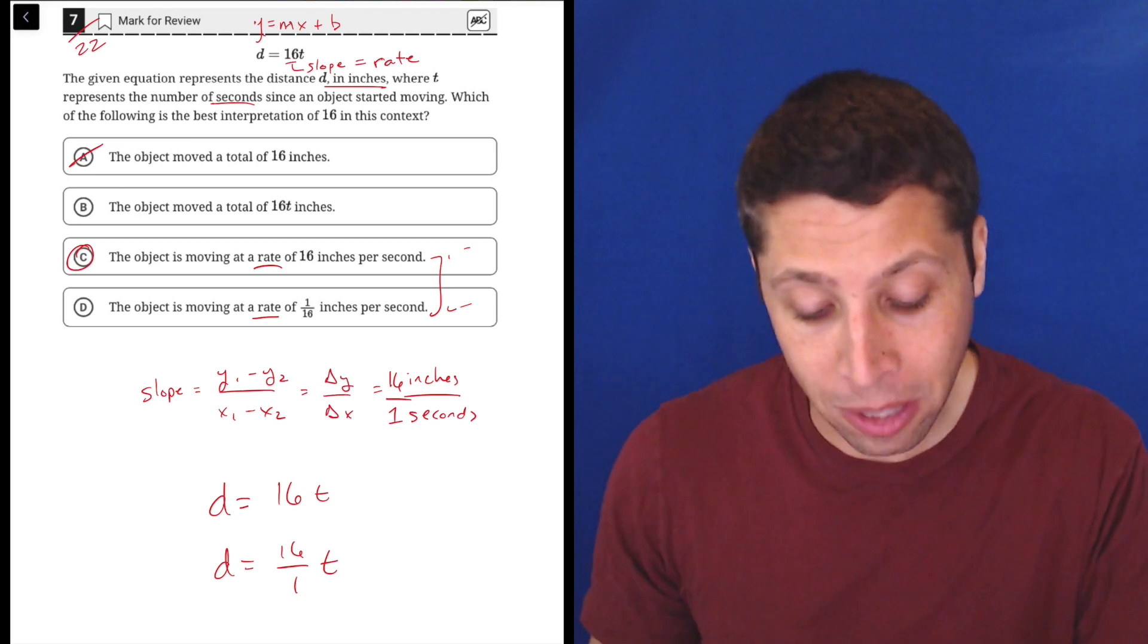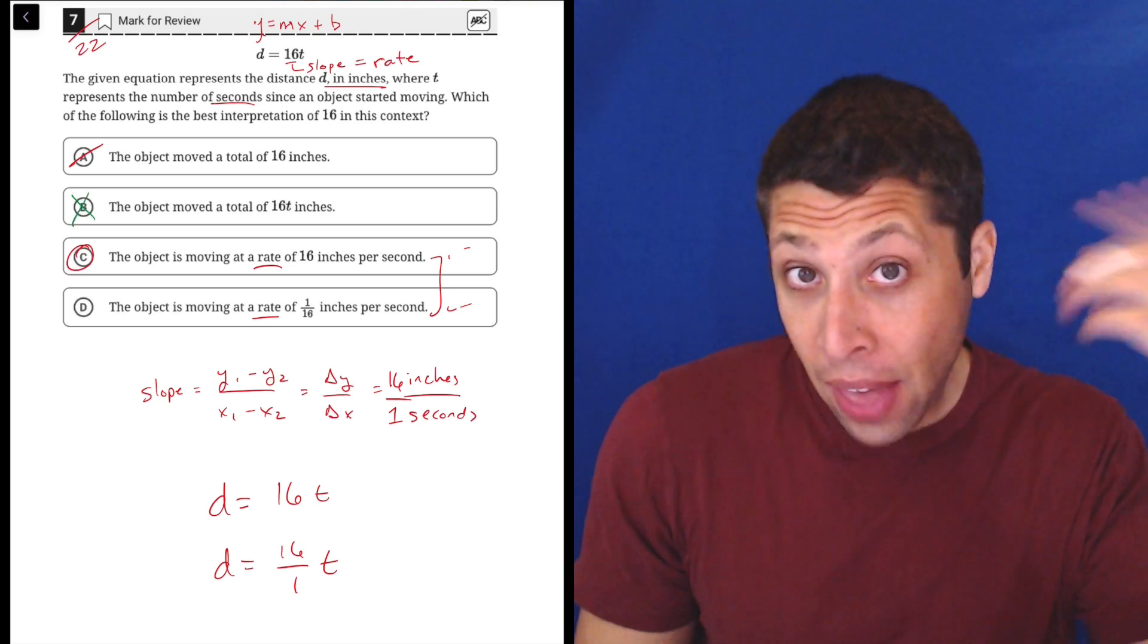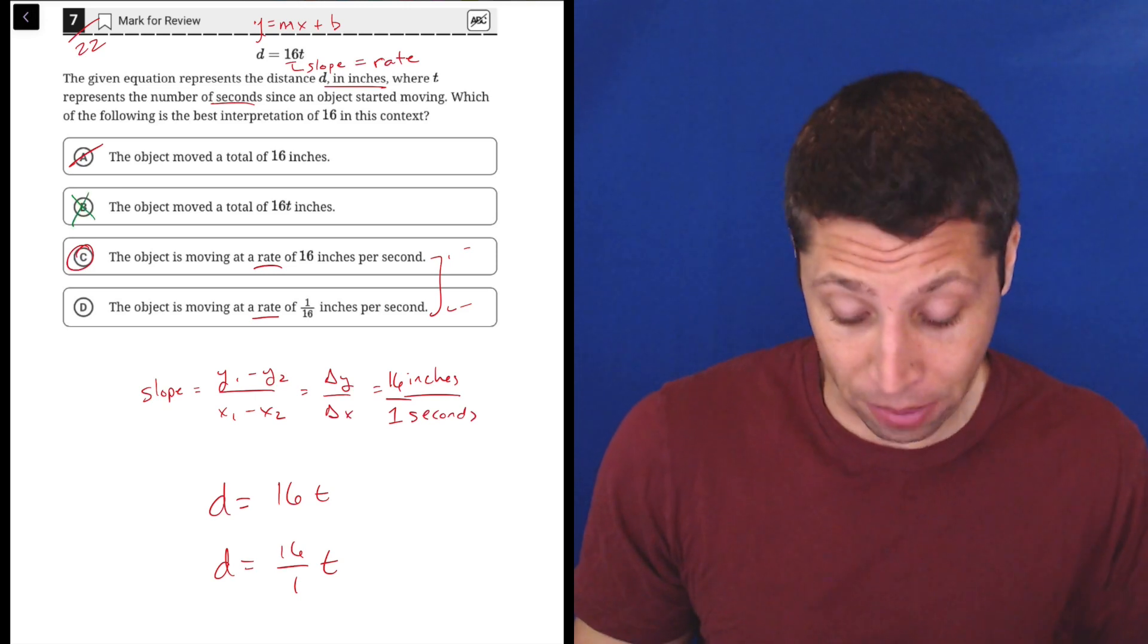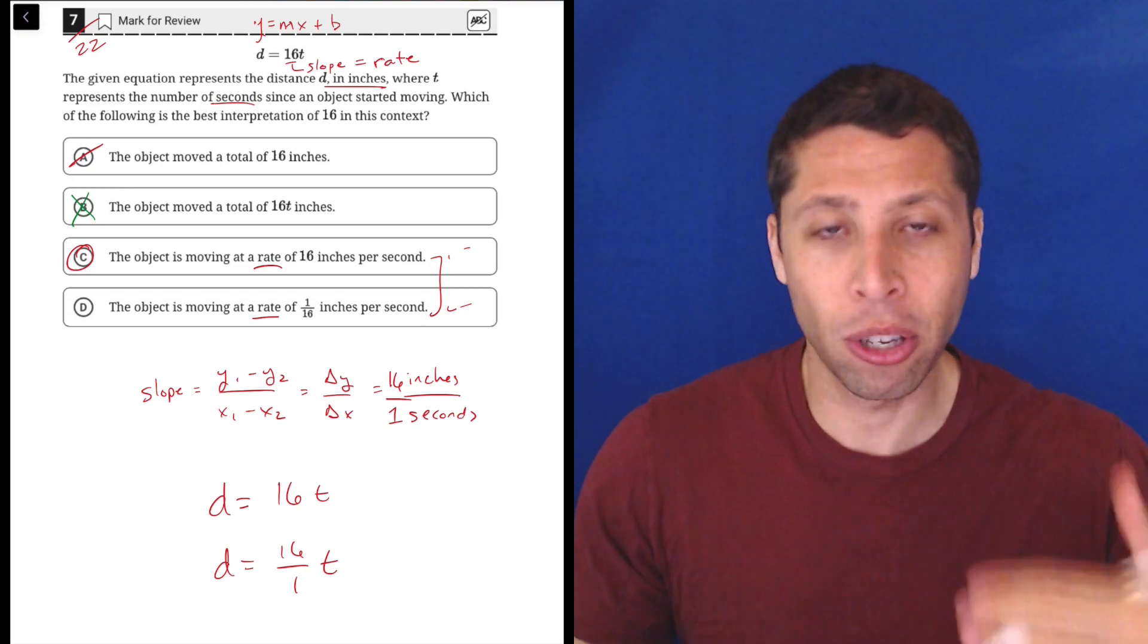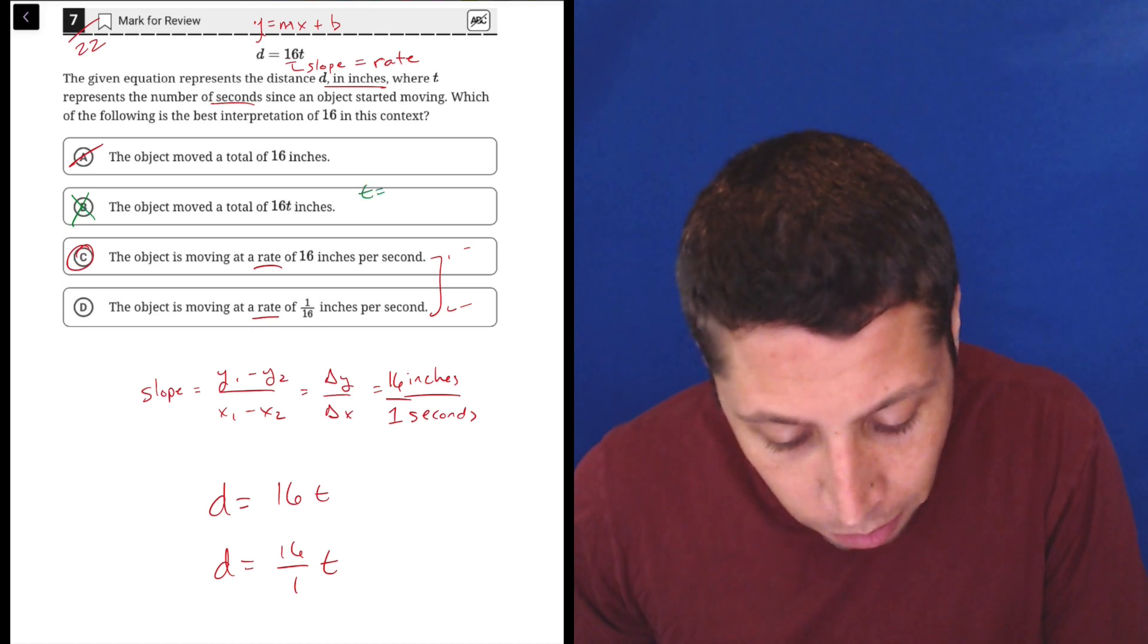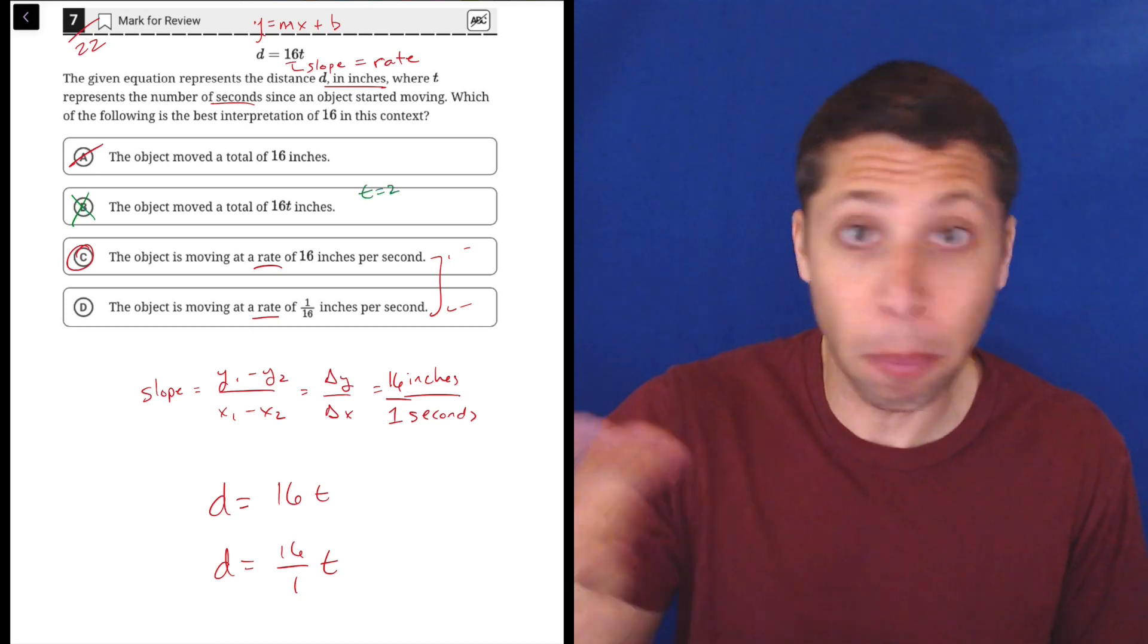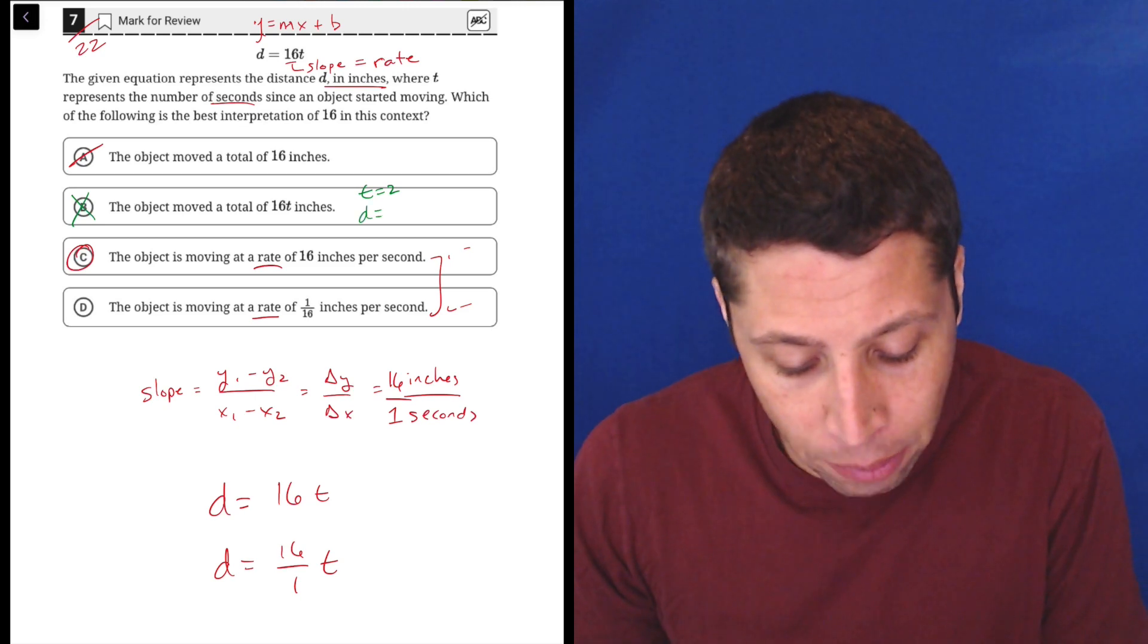The one thing that really bothers me about this is getting back to choice B, which is a bit of a trap, because that answer is true unless I'm misreading something here. The object moves a total of 16T inches, right? So let's say two seconds go by, right? T is 2. What we would do with that T is we would plug that into the equation, so 2 is T and that would be multiplied by 16, and that would get us a value of 32, 2 times 16.